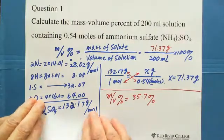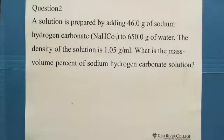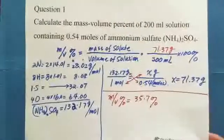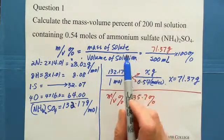Moving on to the second question: a solution is prepared by adding 46.0 grams of sodium hydrogen carbonate to 650 grams of water. The density of the solution is 1.05 grams per milliliter. What is the mass volume percent of the sodium hydrogen carbonate solution? We are still looking for mass volume percent, so we write the definition: mass volume percent equals mass of solute over volume of solution.